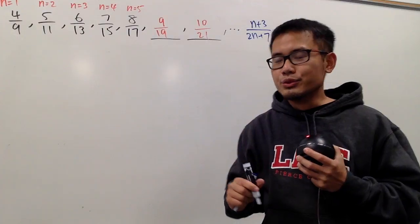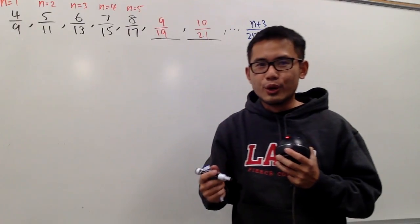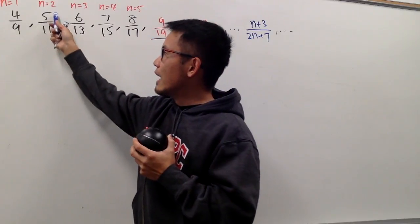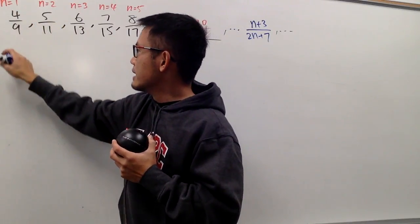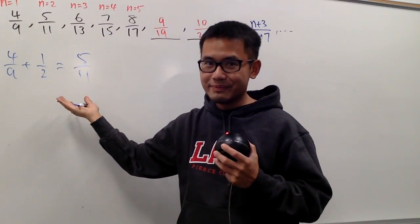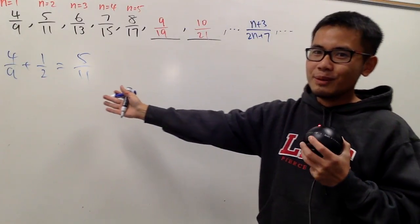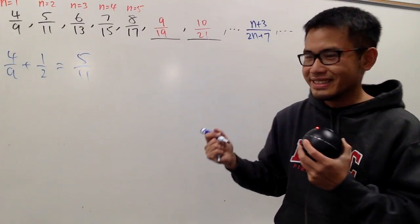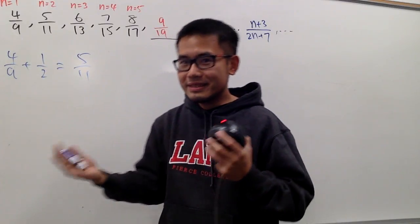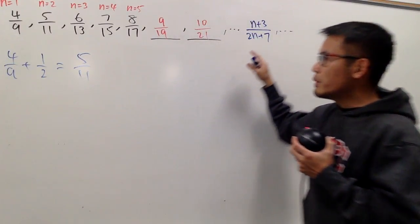However, I always have the issue to talk about how to come up with a recursive formula for this sequence. And this is my typical joke, right, because I will ask my student, how can we go from 4 over 9 to 5 over 11? Do we just go ahead and say 4 over 9 plus 1 half, and that's equal to 5 over 11, like this? If this is the deal, the world will be so much better, right, for a lot of students.